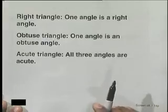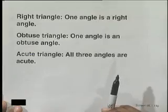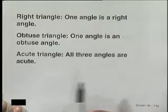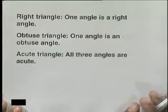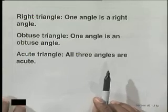An obtuse triangle is where one of the angles is an obtuse angle, which was an angle that was greater than 90 but less than 180 degrees. And the last one is an acute triangle. In this case, we say all three angles are acute, which means that the angle is less than 90 degrees.